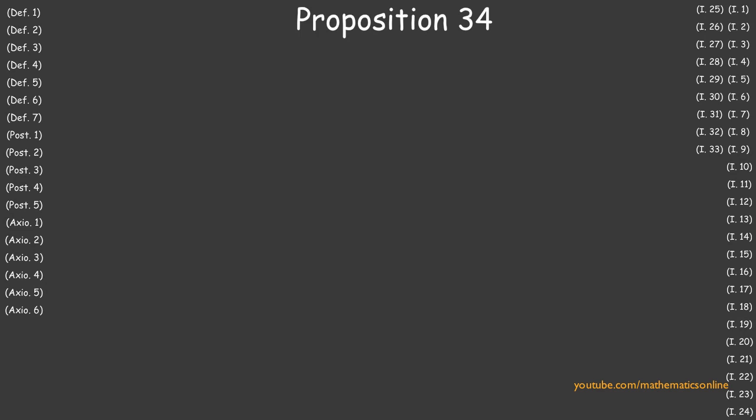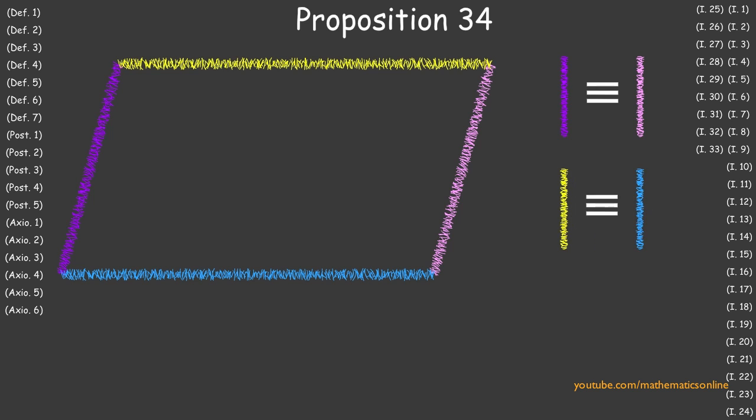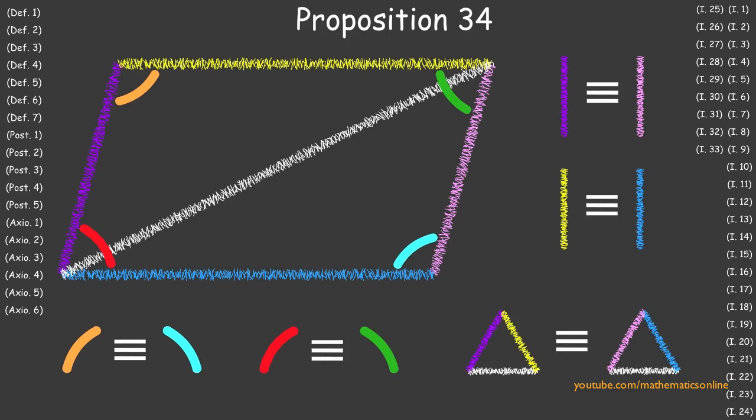In Proposition 34 we proved that a parallelogram has the opposite sides congruent, the opposite angles congruent, and the diameter divides the parallelogram into two congruent triangles.